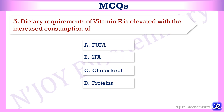Fifth MCQ: dietary requirements of vitamin E are elevated with increased consumption of — polyunsaturated fatty acids, saturated fatty acids, cholesterol, or proteins? The answer is polyunsaturated fatty acids, because they are prone to oxidant injury by free radicals, so higher intake requires increased vitamin E.